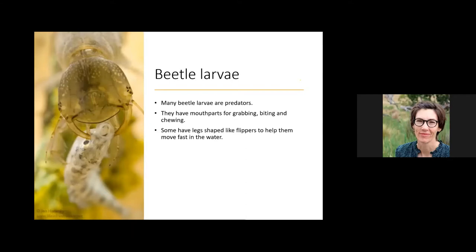A lot of beetles are predators as well. This is a beetle larva — in aquatic systems we just call them larvae. Many beetle larvae are predators with really big mouthparts used for grabbing, biting, and chewing. You can see the huge mandibles holding onto a fish, ready to eat it — that's a predaceous diving beetle. Some beetles also have legs shaped like flippers to help them move fast in the water to chase after prey.